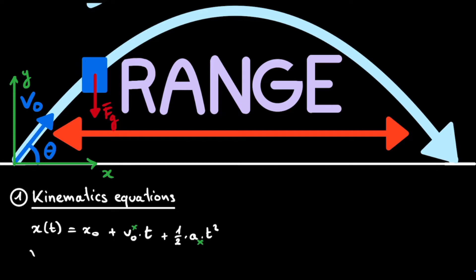We can write down the same equation in the y direction. We have the initial position in the y direction, y₀, plus our initial velocity in the y direction multiplied by t, plus one half multiplied by our acceleration in the y direction, multiplied by t squared.